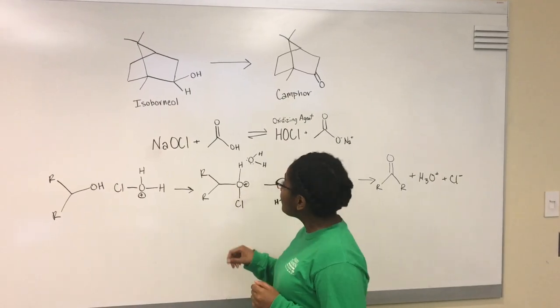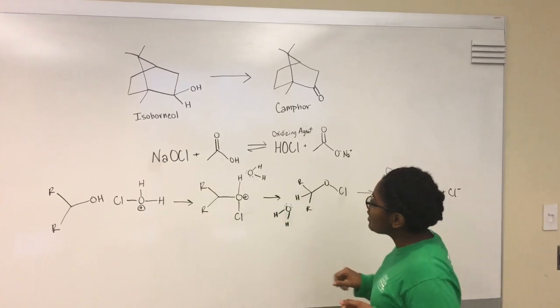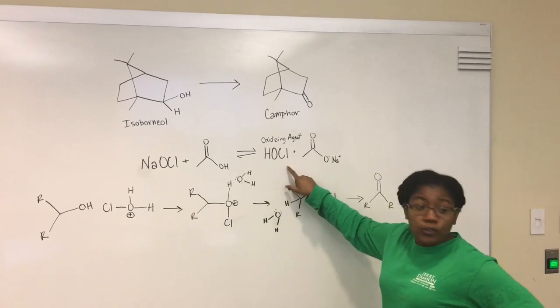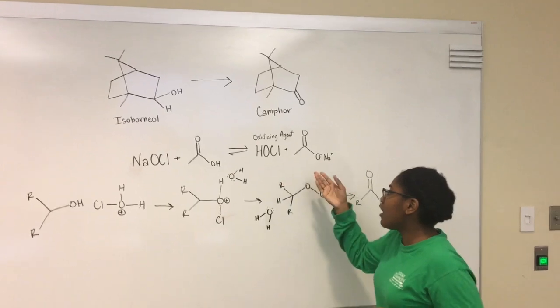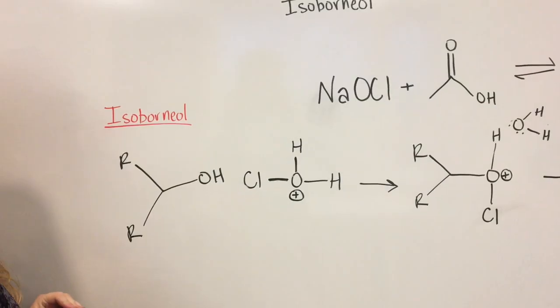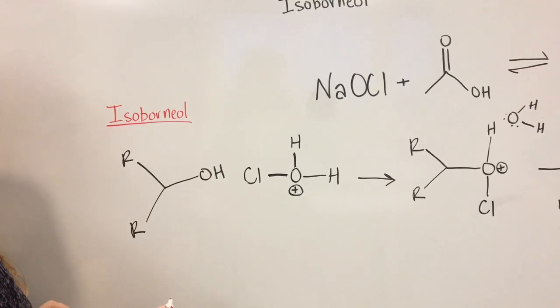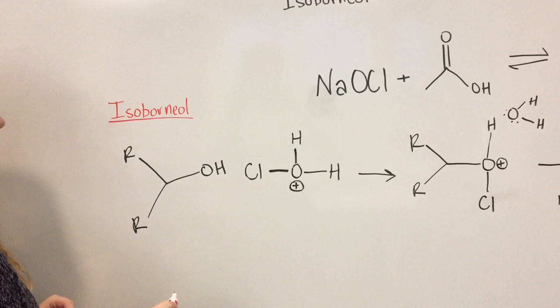In this experiment, we'll be using bleach, which contains sodium hypochlorite, and in the presence of acetic acid, hypochlorous acid will be formed, which is our oxidizing agent for the following mechanism. For simplicity, R represents carbons of the ring structure of isoborneol in the reactants and camphor in the products.